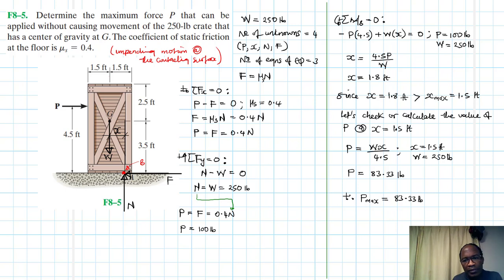So I think this is about it. This is the value of P that we need to apply without causing the crate to overturn. I hope this video is helpful. This is the maximum value that won't cause the crate to overturn.